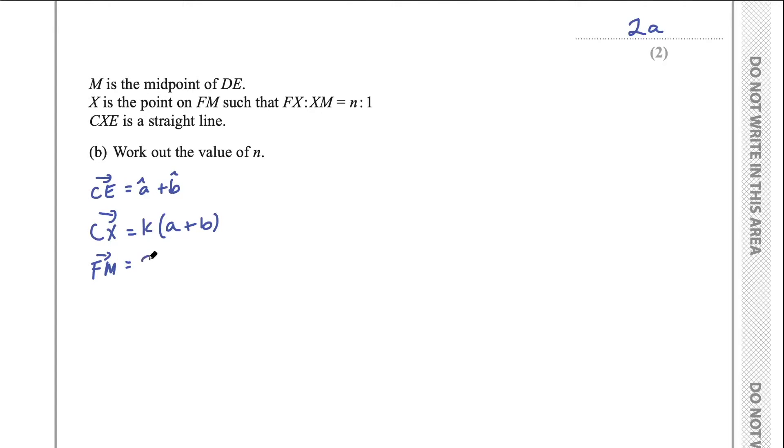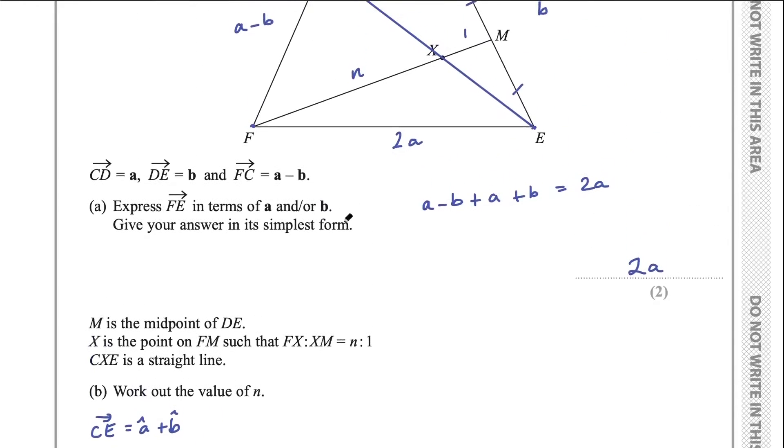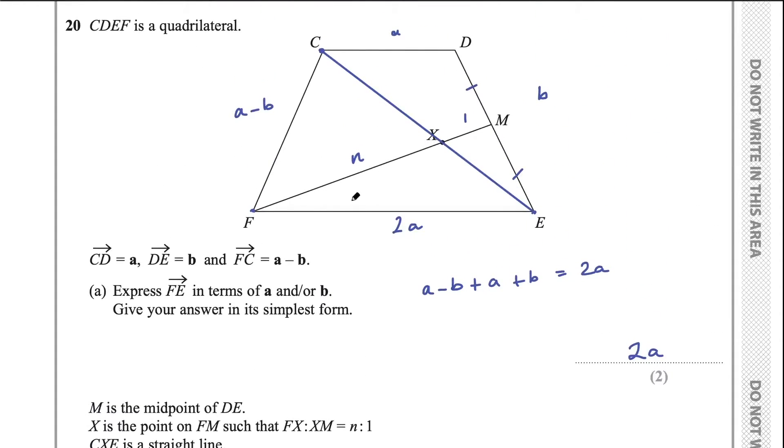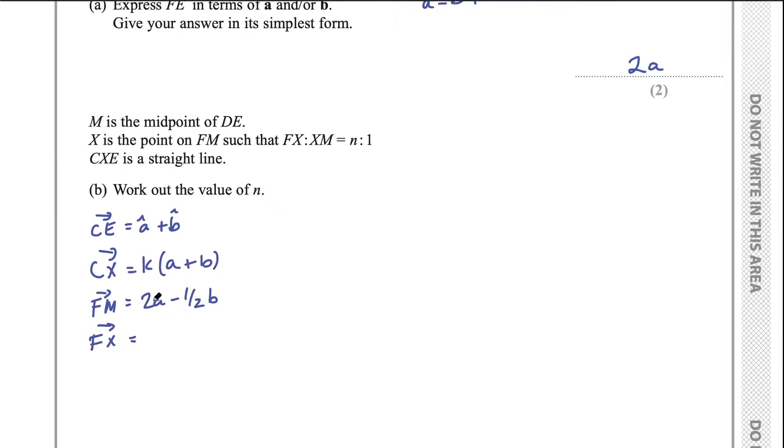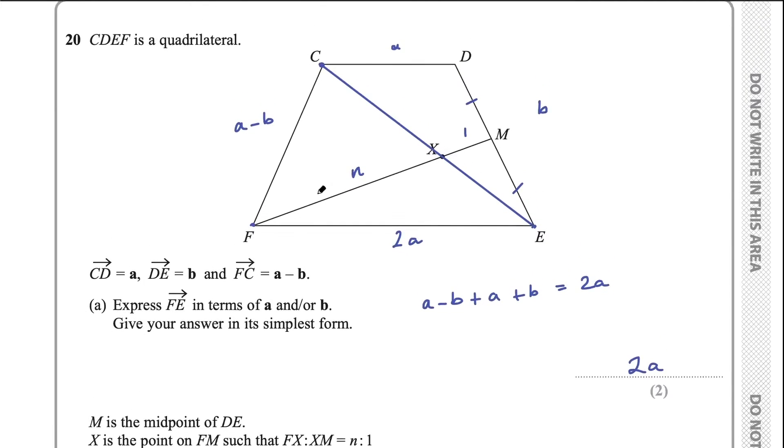FM equals 2a take half b. And now what I want to do is to create two expressions for FX. Okay. So FX could be some fraction of FM, right? Some part of FM. And then FX could also be FC plus CX.